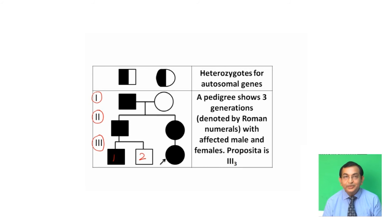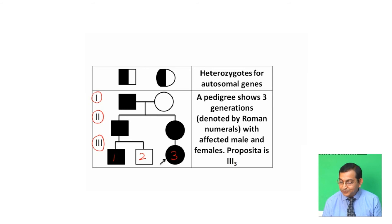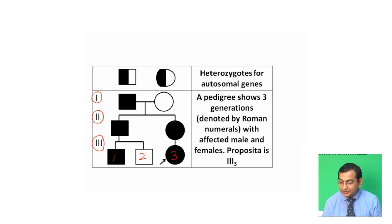In this example, the proposita is individual III-3. In this way, individuals and generations can be identified within a pedigree.